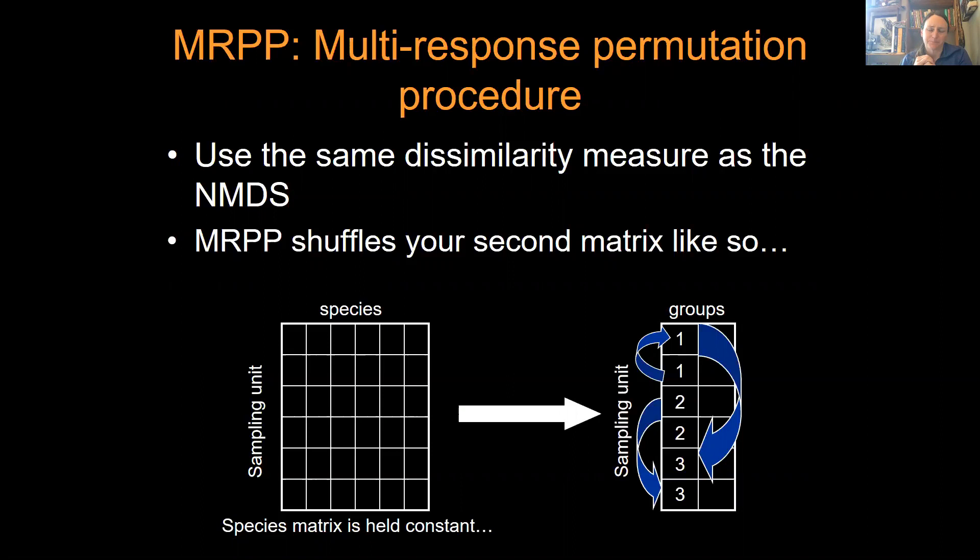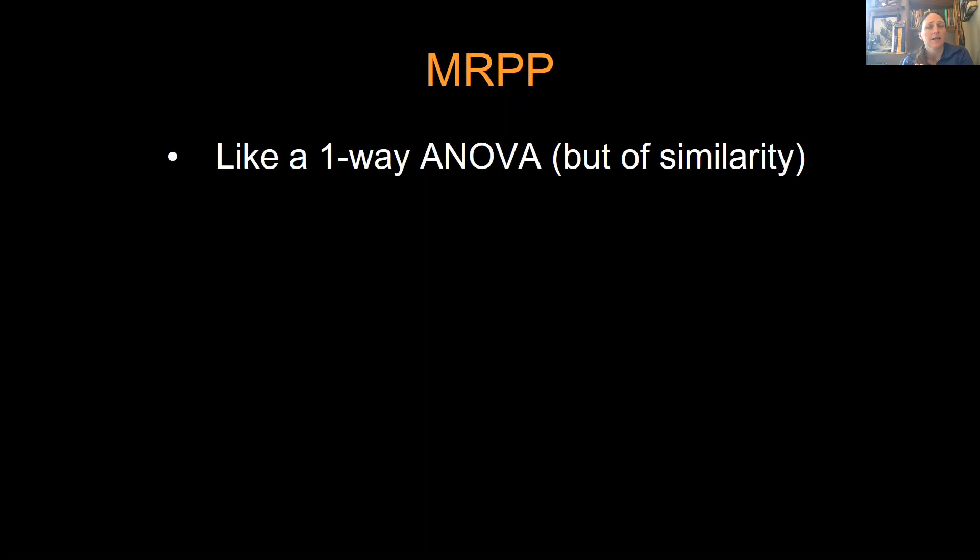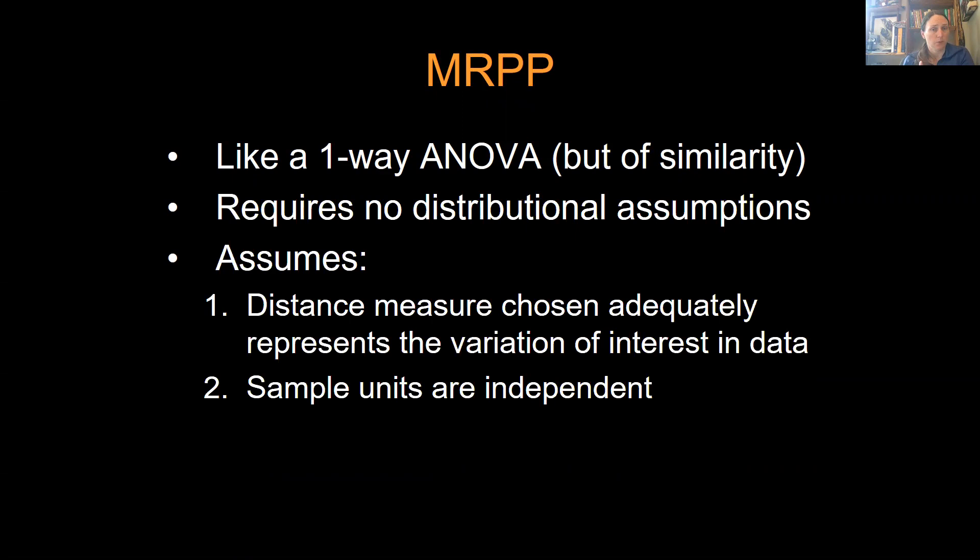It's basically creating a random distribution of similarities based on when group membership has been randomized, then comparing your actual dissimilarity to that randomized dissimilarity to see how possible it would be due to chance alone. So MRPP is kind of like a one-way ANOVA, but it's a test of similarity instead of variation. It requires no additional distributional assumptions. You don't have to test for normality or homogeneity of variance. It does assume you chose your distance measure appropriately and that your sample units are independent. The Y variables in an ordination and MRPP are not independent of one another, but your sampling units should be. You should be going to plots that are separate enough in space that they're not influencing one another.